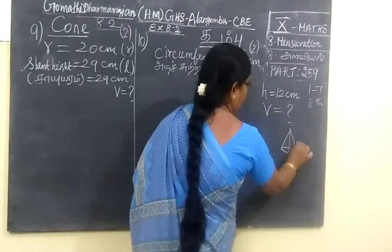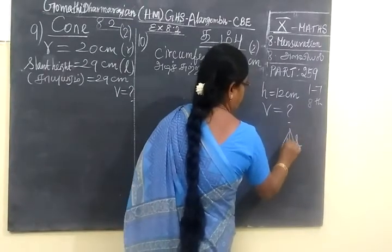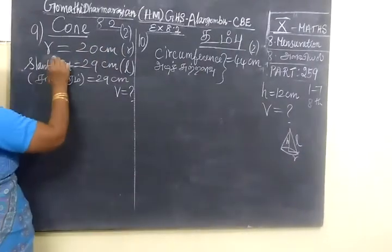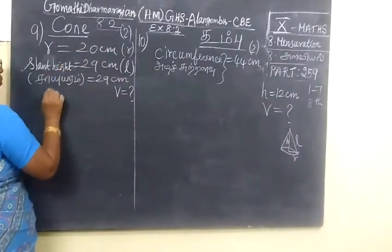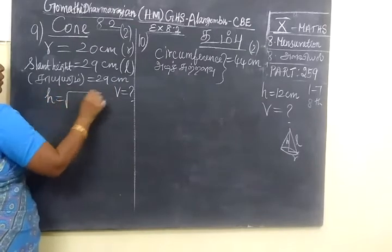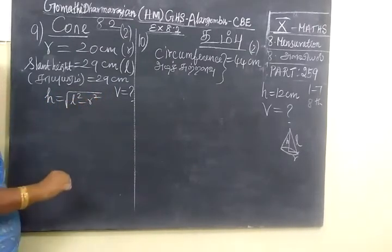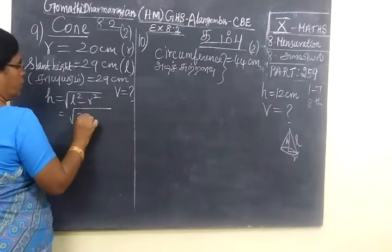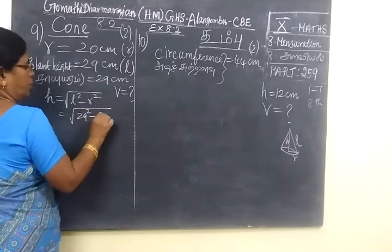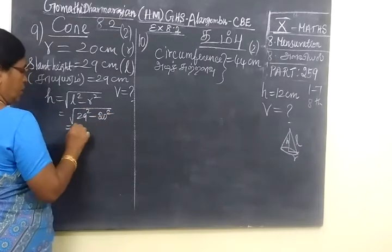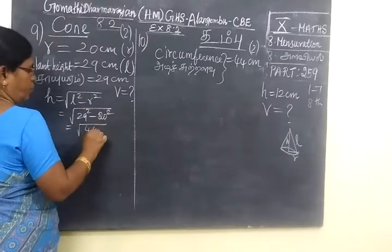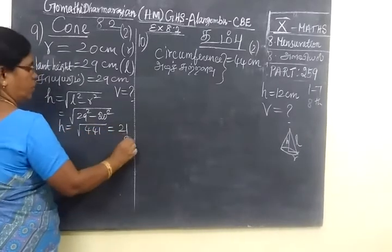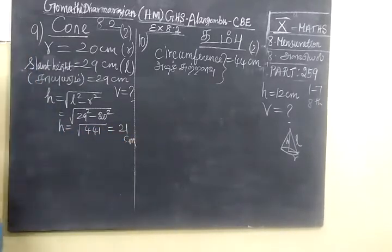This is radius. It is slant height. We want to find h equal to L square minus R square. L equal to 28 square minus 20 square, 441 equal to 21. So h equal to 21 centimeter.